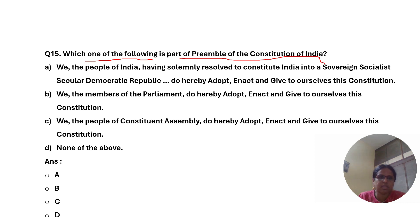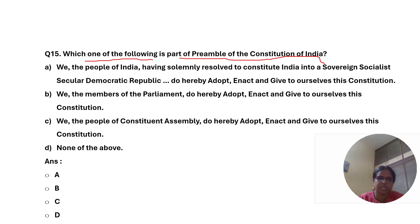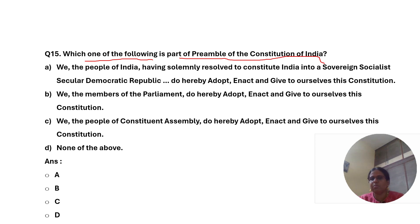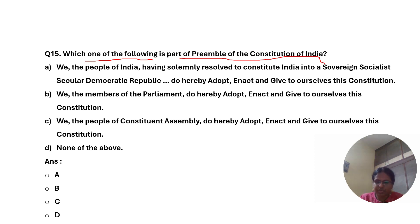Option B: We, the members of the parliament, do hereby adopt, enact and give to ourselves this constitution. Option C: We, the people of the constituent assembly, do hereby adopt, enact and give to ourselves this constitution. Option D: None of the above.